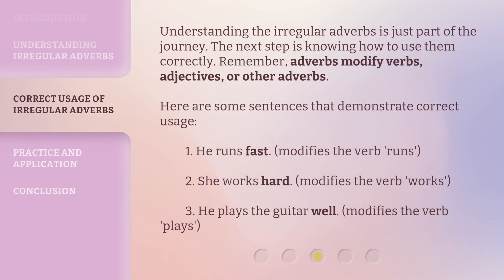Understanding irregular adverbs is just part of the journey. The next step is knowing how to use them correctly. Remember, adverbs modify verbs, adjectives, or other adverbs. Here are some sentences that demonstrate correct usage: 1. He runs fast — modifies the verb "runs". 2. She works hard — modifies the verb "works". 3. He plays the guitar well — modifies the verb "plays".